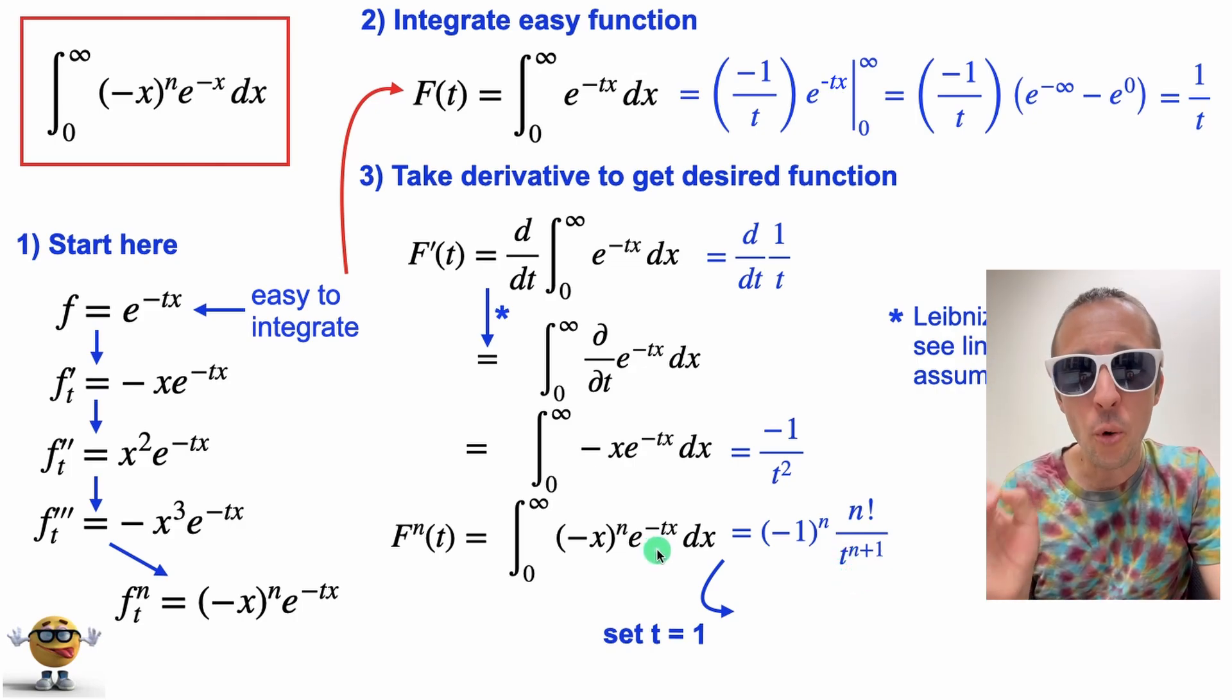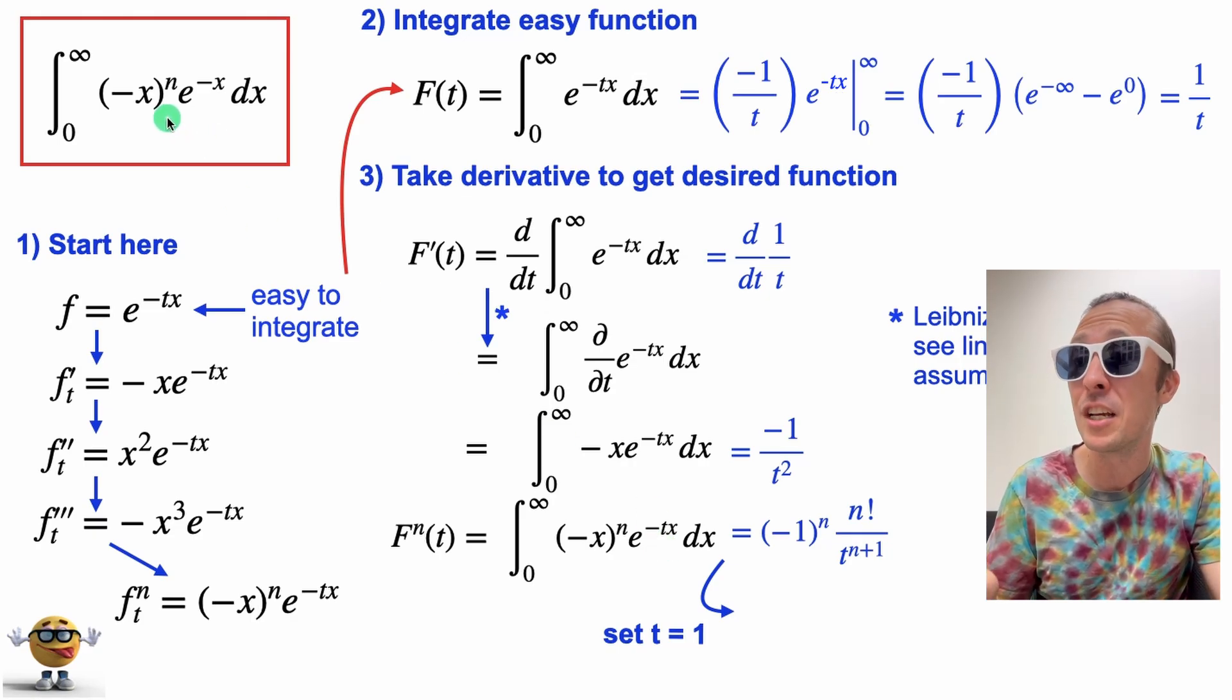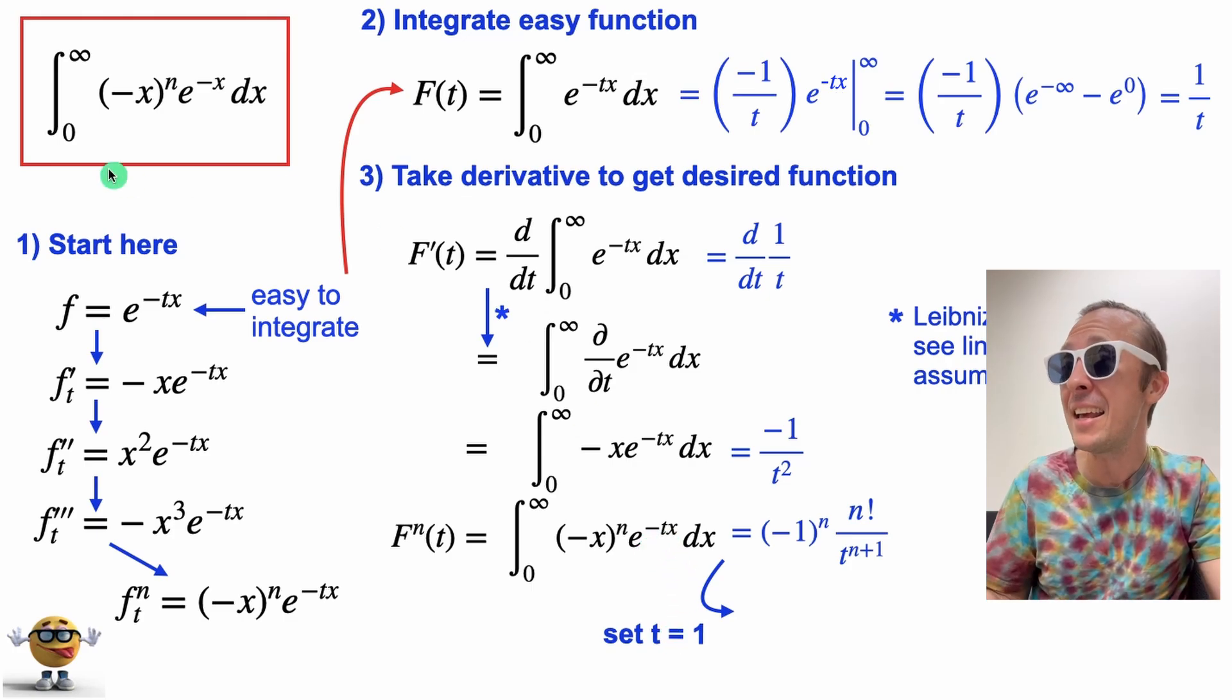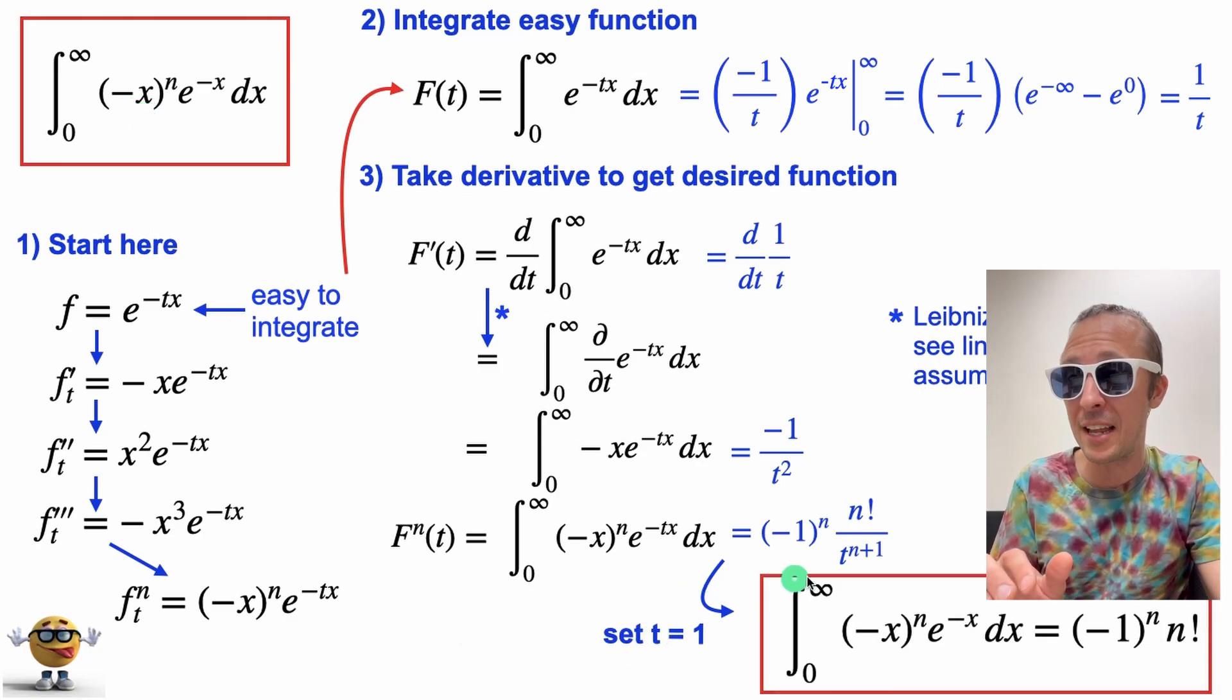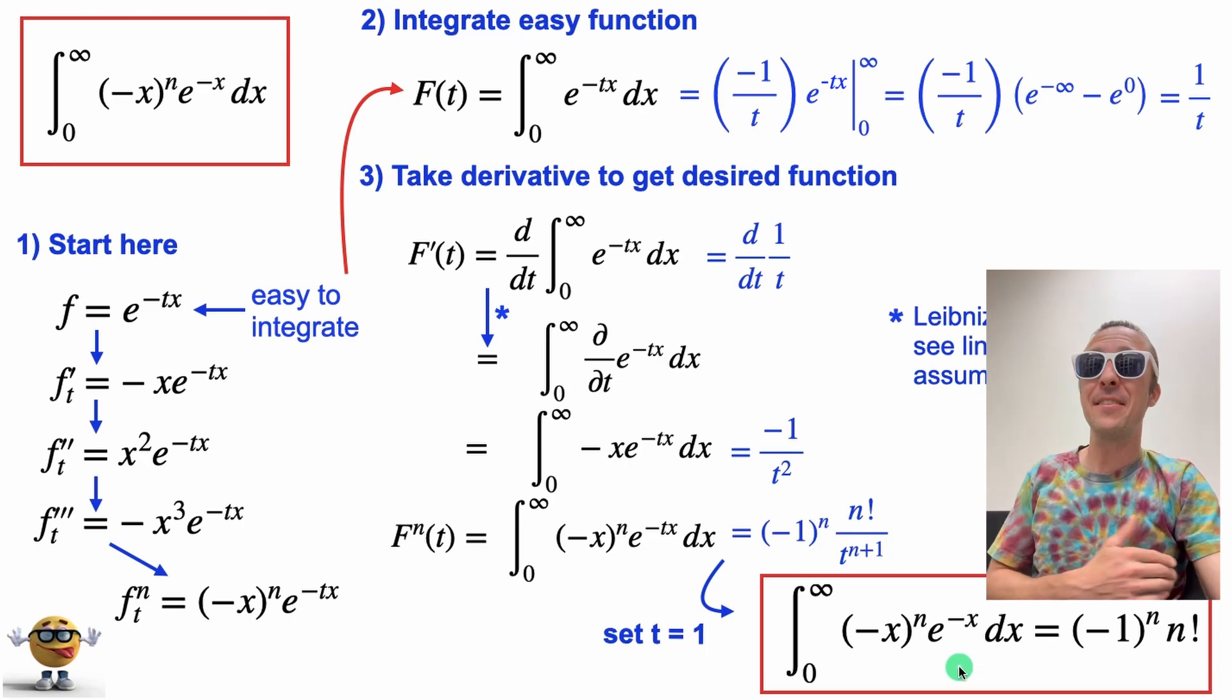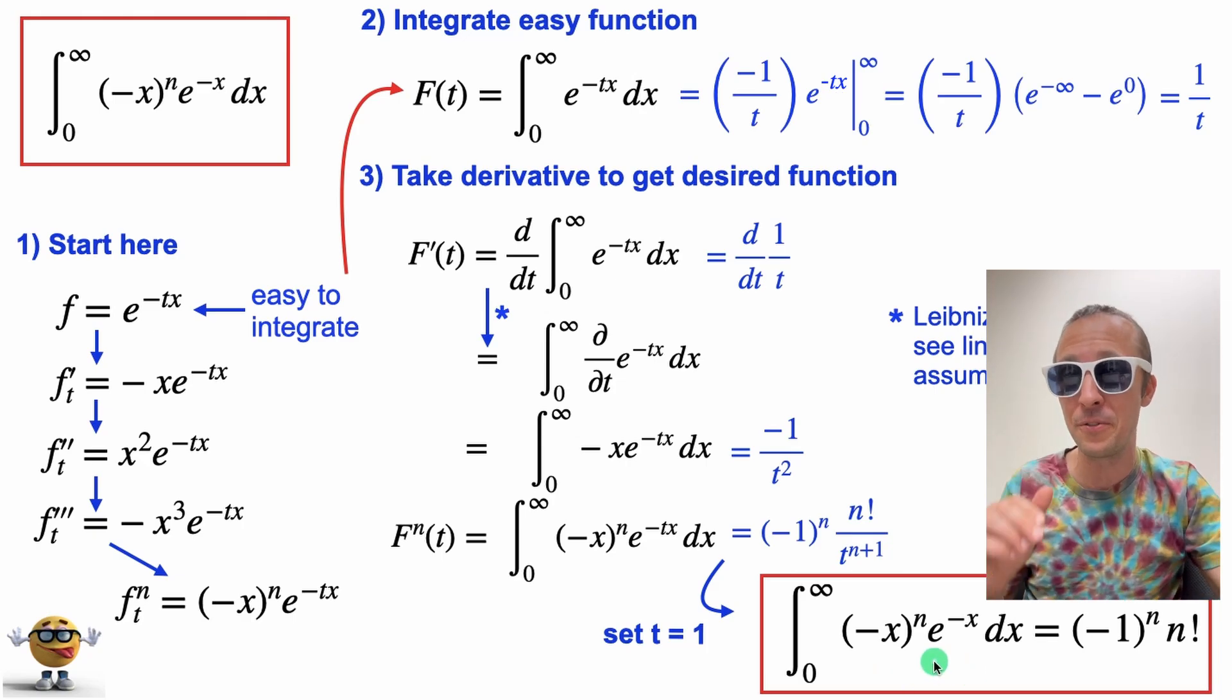Now we still have this annoying t here, right? And there's no t in the function that we want to integrate. But if we set t equal to 1, then that is precisely the integral that we want, the function that we want to integrate. So we leave that. So we'll set t equal to 1, and then over on this right-hand side, t equals to 1. And this, my friends, this in all its glory, gives us the integral of this crazy lasting integral from 0 to infinity.